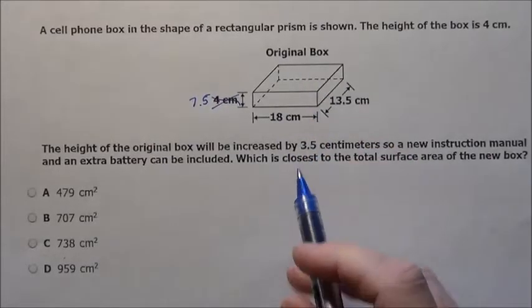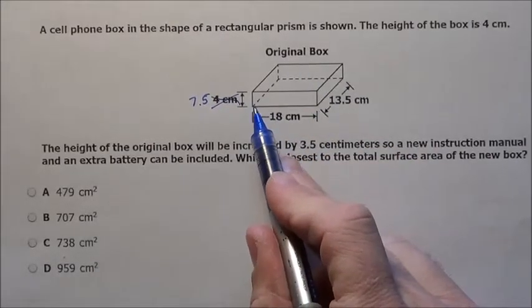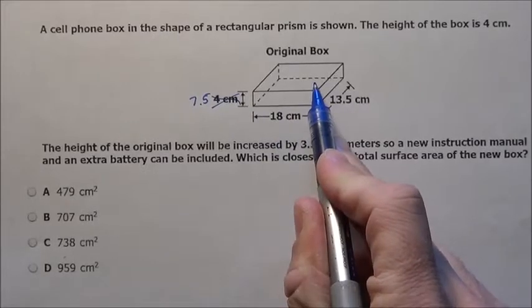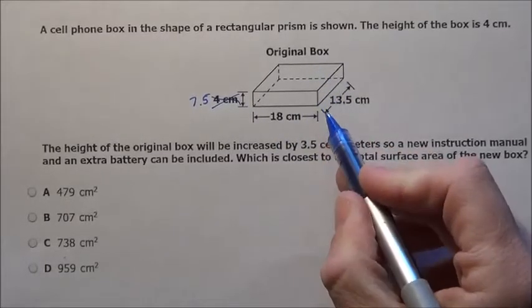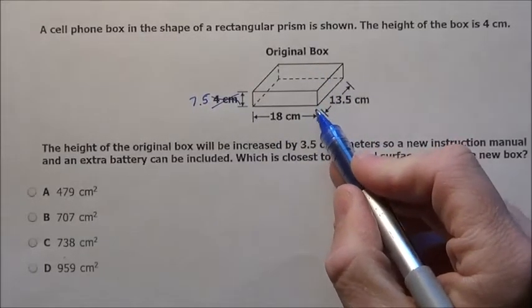Now you can use your formula or just common sense. You're going to have a front face here that's 18 by height of 7.5 and the back will match. So you can multiply those and double it.